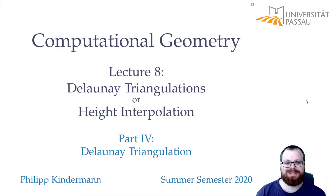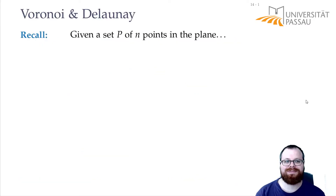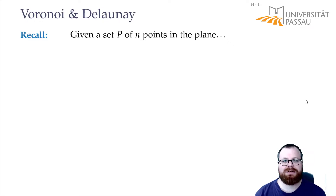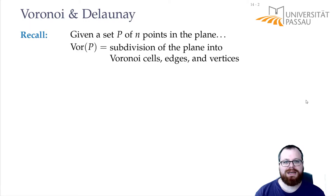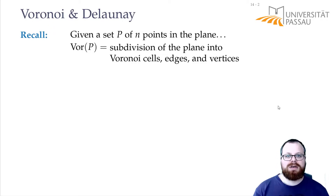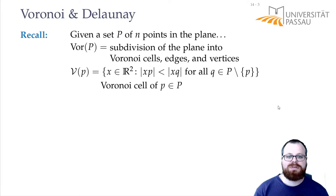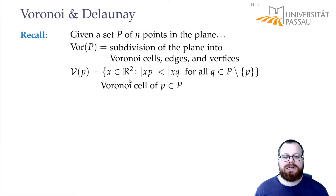This other type of triangulation is the so-called Delaunay triangulation, and it relates to the Voronoi diagram that we learned about in the previous lecture. Let's recall what the Voronoi diagram is. If we have a set of n points in the plane, then the Voronoi diagram is the subdivision into Voronoi cells, edges and vertices. The Voronoi cell of a site is the set of all points in the plane that are closer to this site than to any other site.